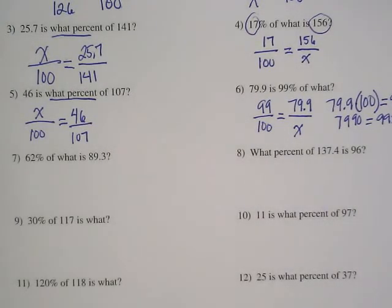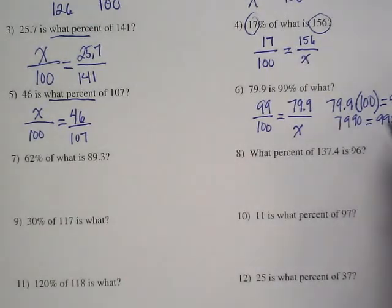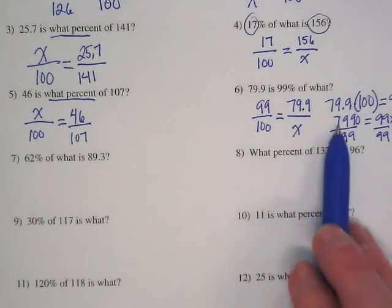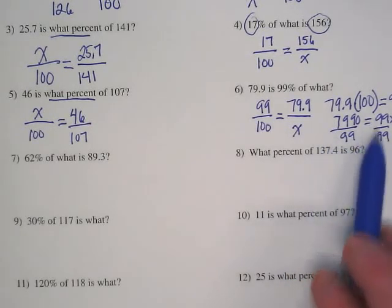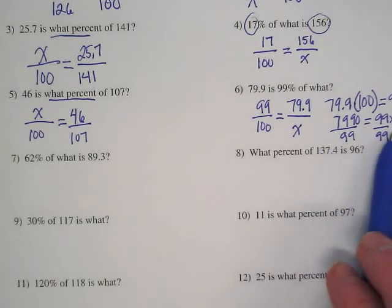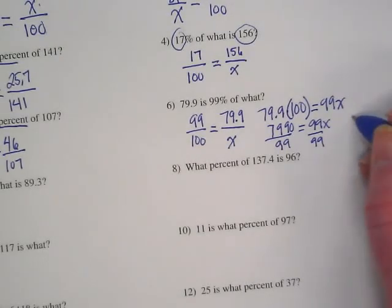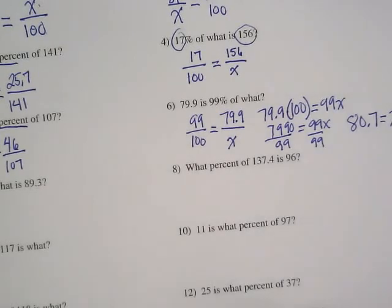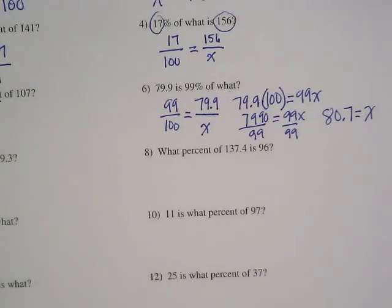7,990 is equal to 99X. What are we going to divide by? Divide by 99. And I want to show I'm dividing both sides by 99. This side is going to give us an answer. This side is going to be invisible one with an X. So we end up with 80.7 equals X. And that makes sense doesn't it? 80.7 is not much more than 79.9 but 99% is almost 100.